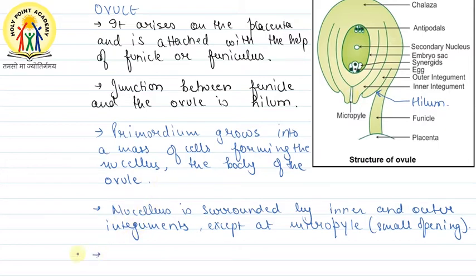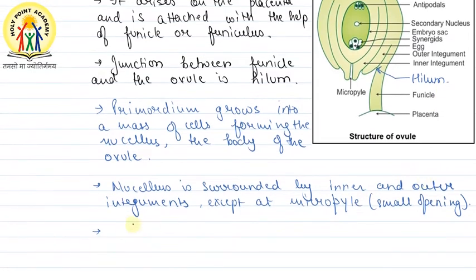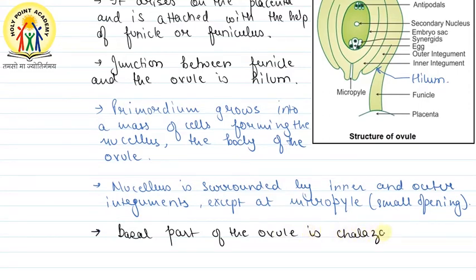The base part of the ovule, just opposite to the micropyle, is known as the chalaza. The basal part of the ovule is the chalaza, which lies just 180 degrees opposite to the micropyle.